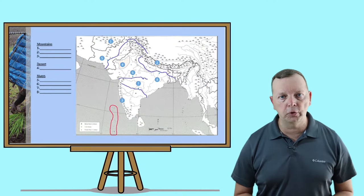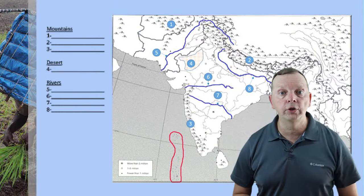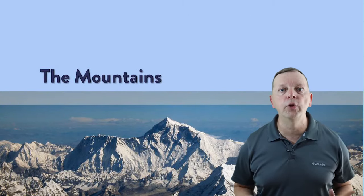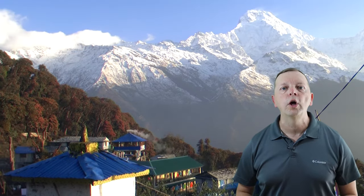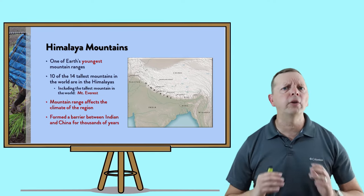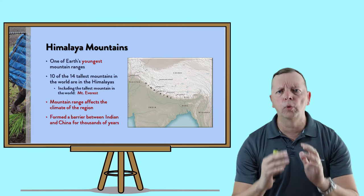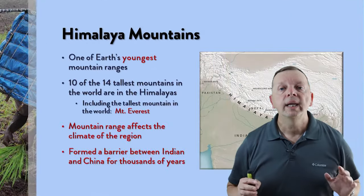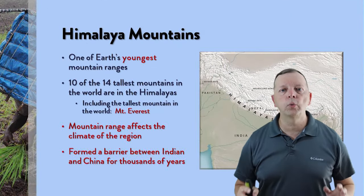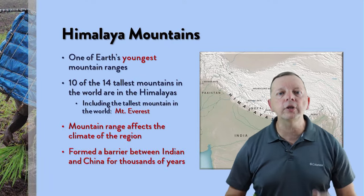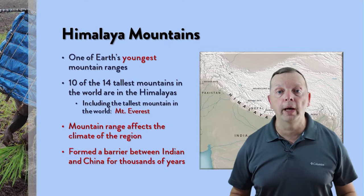There are a total of eight different physical features we're going to talk about: three mountain ranges, one desert, and four rivers. When we talk about mountains in South Asia, we have the largest mountains in the world, which are the Himalayas. They are also the youngest mountains in the world. Younger mountains tend to be taller because they haven't been eroded — remember the discussion about the Appalachians and the Rockies in North America. Of the 14 tallest mountains in the world, 10 are found in the Himalayas, including Mount Everest, the tallest mountain in the world.